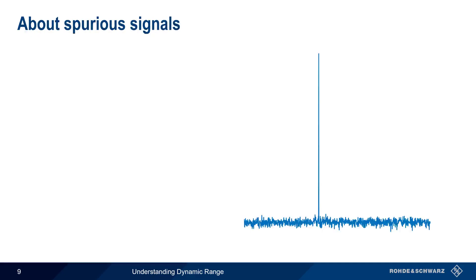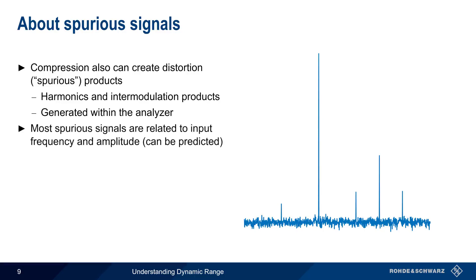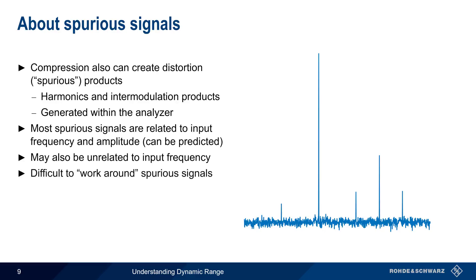In addition to causing inaccurate amplitude measurements, compression can also create distortion or spurious products. These include both harmonics and intermodulation products, which are generated within the analyzer itself and which are not present in the input signal. The frequencies of both harmonics and intermodulation products are usually related to the frequency and amplitude of the input signal or signals, and thus can be predicted. In some cases, however, spurious signals may also be unrelated to input signal frequency, and may appear on the analyzer display even when no input signal is present. Generally speaking, spurious signals are difficult to filter out or otherwise work around, and thus the presence of spurious signals limits the range over which we can accurately or reliably measure signals.